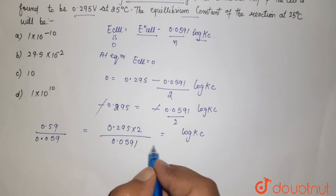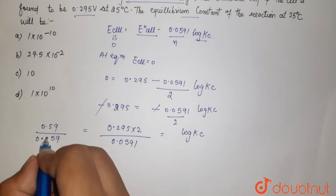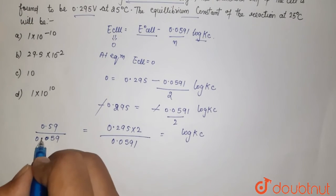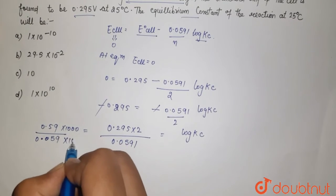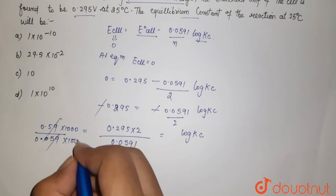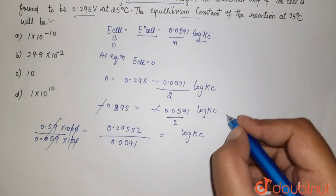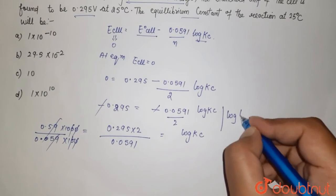So here, you can skip this. You can also write this 0.0596. Here if you remove the decimals by counting places, now this has been cancelled. So we get to know that your log Kc, it comes out to be 10.